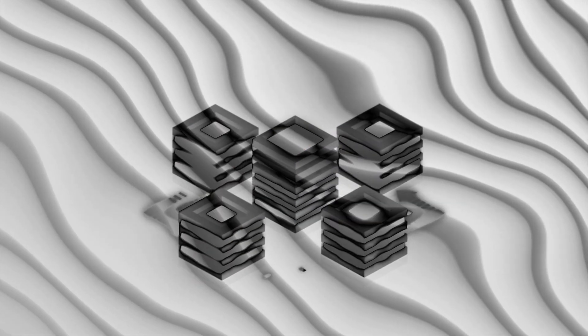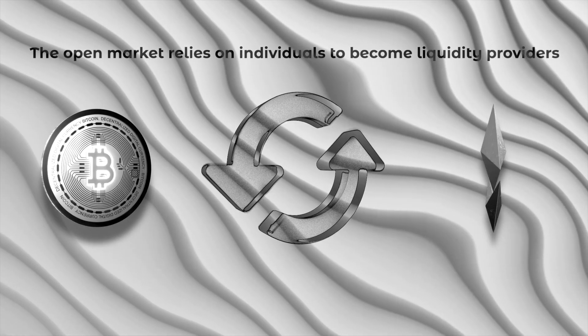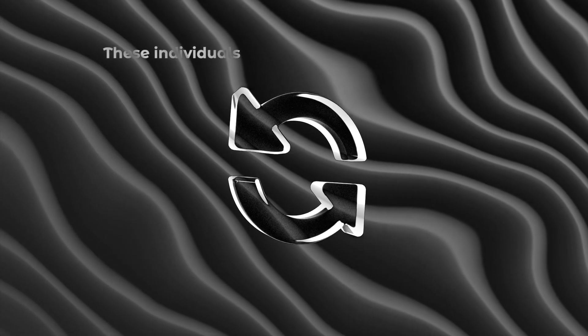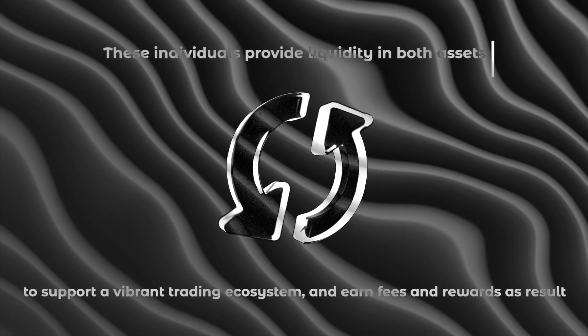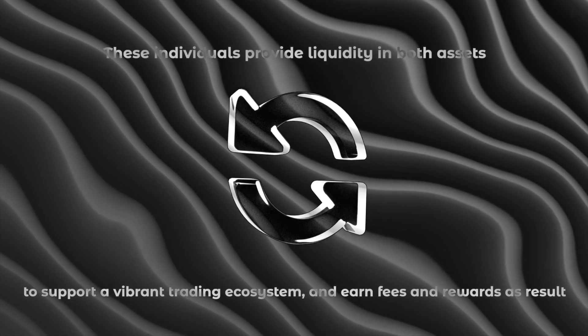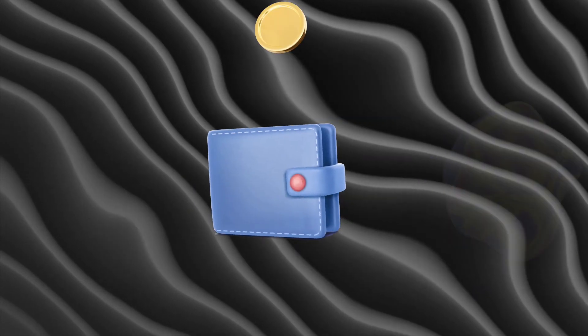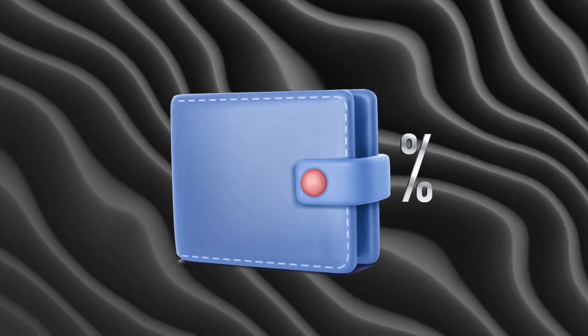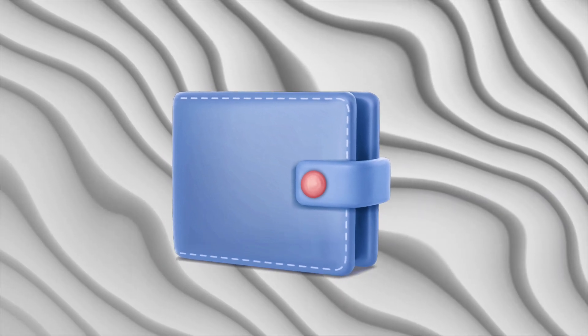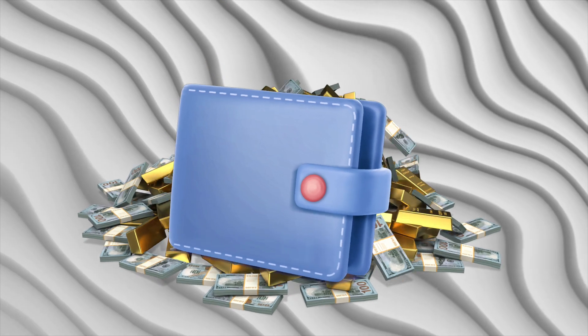When it comes to blockchain, the open market relies on individuals to become liquidity providers. These individuals provide liquidity in both assets to support a vibrant trading ecosystem, and earn fees and rewards as a result. Fees are dependent on how many trades your liquidity has supported. With each trade, you make a small percentage, paid directly by the trader. In some cases, you may be eligible for extra reward, provided by the project or the protocol to incentivize people like you to provide liquidity.